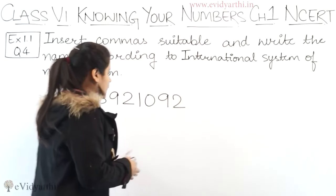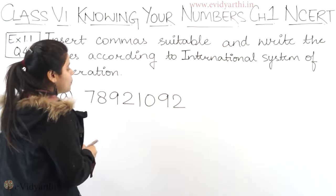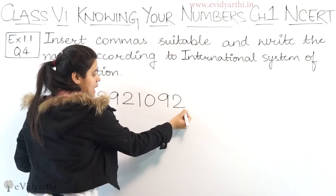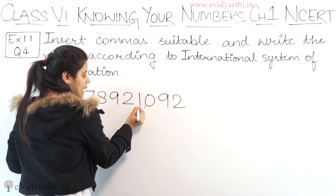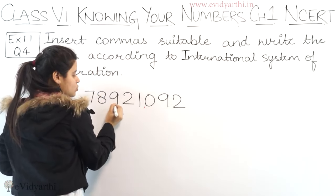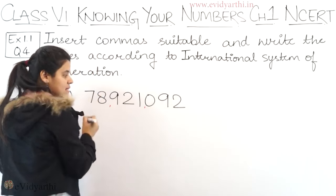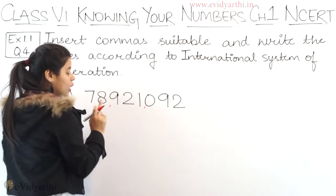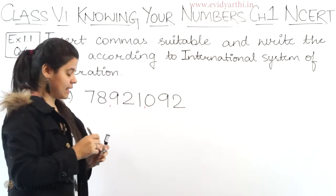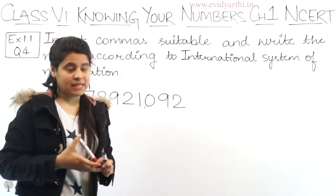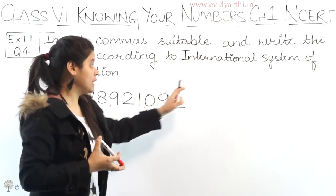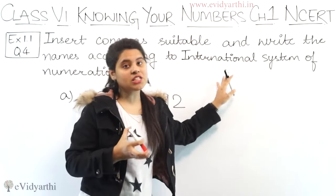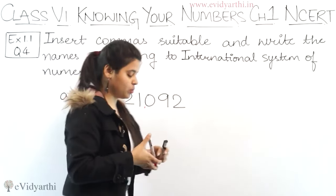This means if I put a comma here, then we start with 3 digits, then again 3 digits. So here we have 2 commas. Now we are going to write the names. Remember, we are going to write using the international system of numeration.